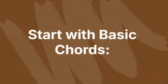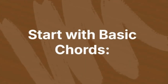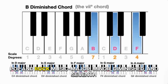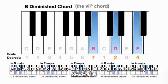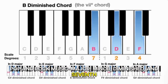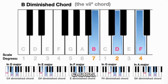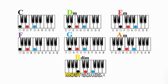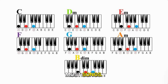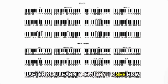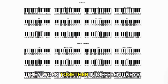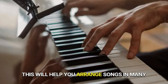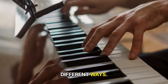Start with basic chords. Begin by learning the main chords used in pop and rock music: major, minor, diminished, and seventh chords. These chords are the basic building blocks of most songs. After you learn them, try to see how they work together in different keys. This will help you arrange songs in many different ways.